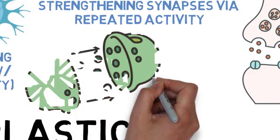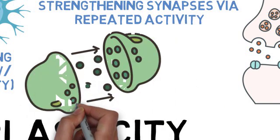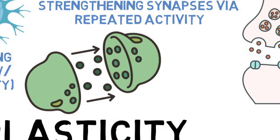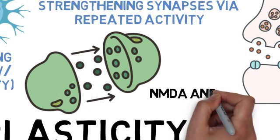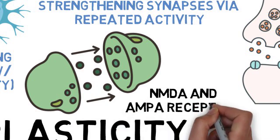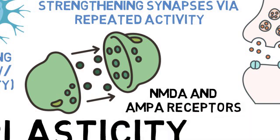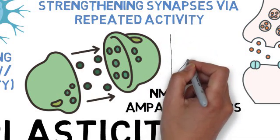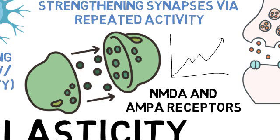The molecular mechanisms behind synaptic plasticity involves various proteins and signaling pathways. Two key receptors involved in synaptic plasticity are NMDA and AMPA receptors. During LTP, NMDA receptors allow calcium ions to enter the neuron, triggering a cascade of events that increase the number of AMPA receptors at the synapse. This makes the synapse more responsive to future signals.